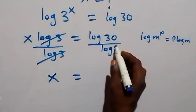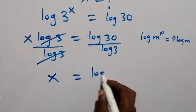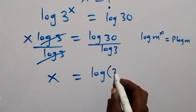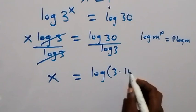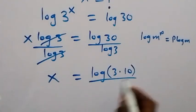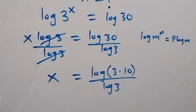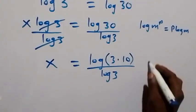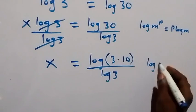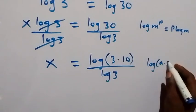which is then equals to log 30. Let's separate it as log 3 multiplied by 10, and this is divided by log 3. And also from the law of logarithm, when we have log of two numbers multiplying, that's log a times b,